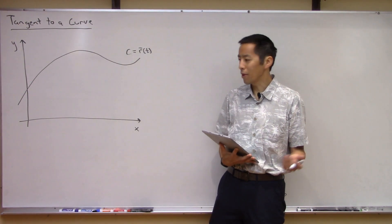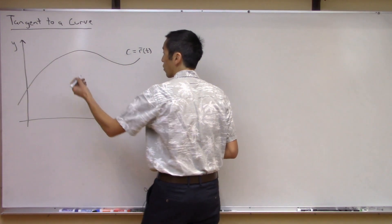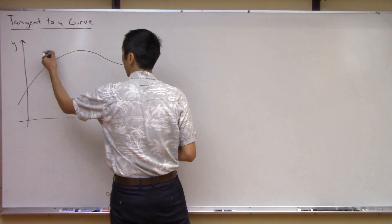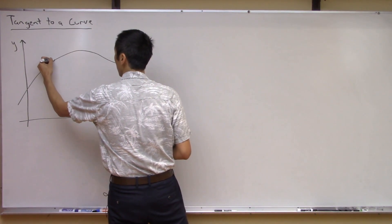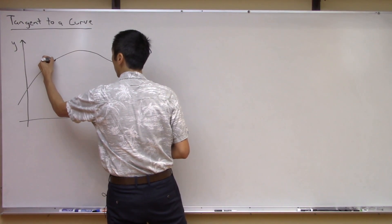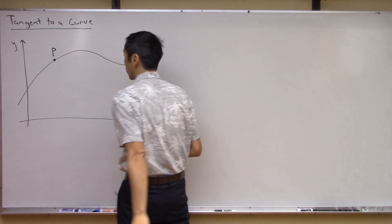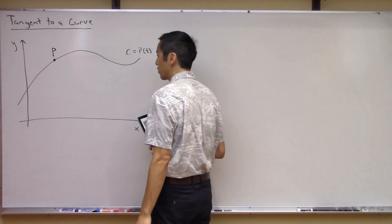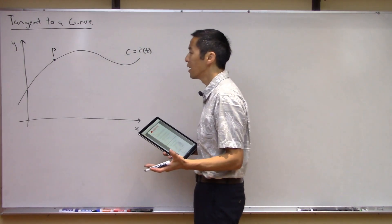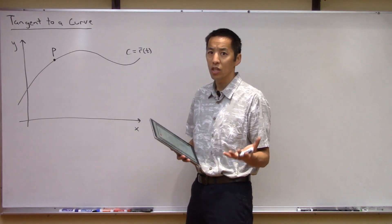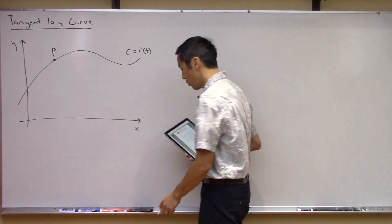So any point on this curve — let's pick one, say here — let's call this the point P. This is some point of interest, and what I want is the tangent to the curve C at this point P.